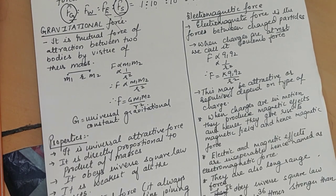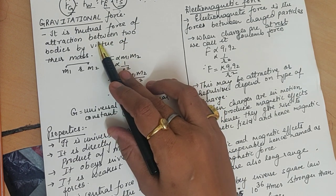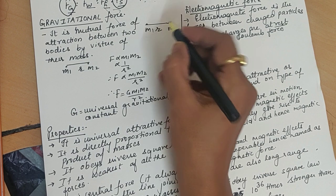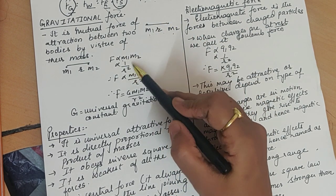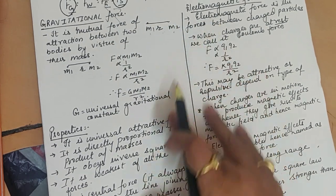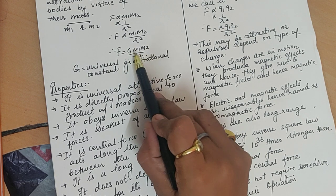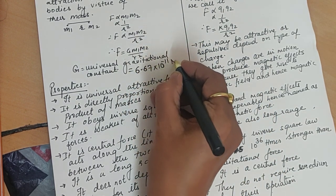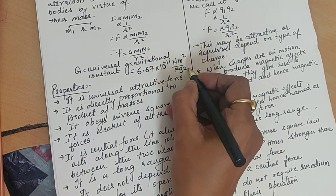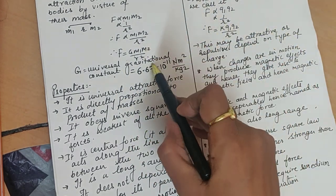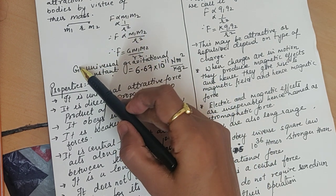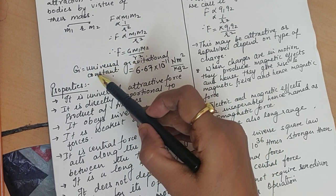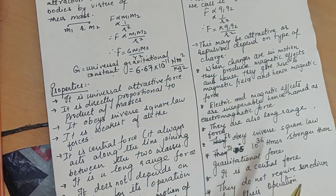Now let's study gravitational force in detail. Newton's law of attraction states that when two masses are separated by a distance, the force is directly proportional to the product of the masses and inversely proportional to the square of the distance between them. Removing the proportionality sign, we introduce the universal gravitational constant G, whose value is 6.67 × 10⁻¹¹ N·m²/kg². It is a universal constant — its value does not change anywhere. Do not confuse capital G (universal gravitational constant) with small g (acceleration due to gravity), which changes with place.